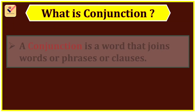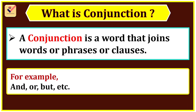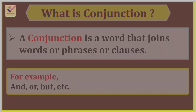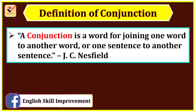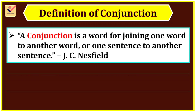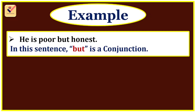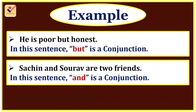What is a Conjunction? A conjunction is a word that joins words, phrases, or clauses. For example: and, or, but, etc. According to J.C. Nesfield, a conjunction is a word for joining one word to another word or one sentence to another sentence. According to Ren and Martin, a conjunction is a word used to join words or sentences. For example: 'He is poor but honest.' — but is a conjunction. 'Shachin and Sourav are two friends.' — and is a conjunction.